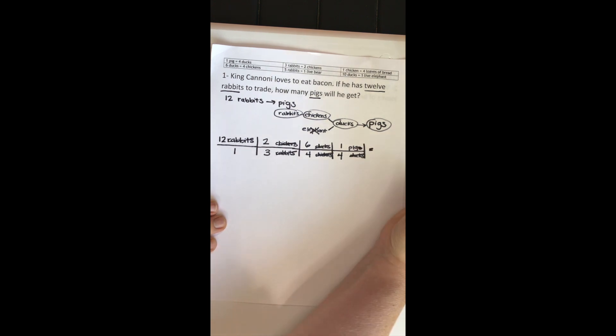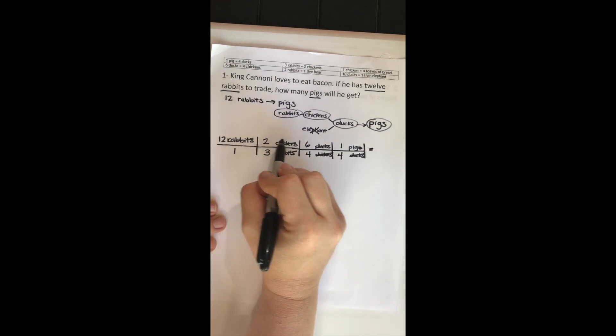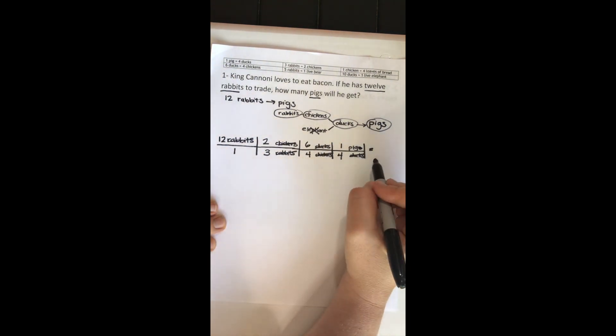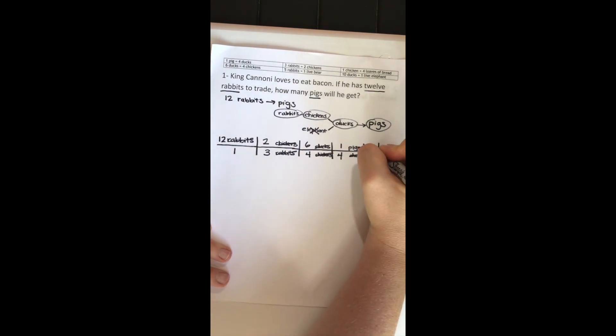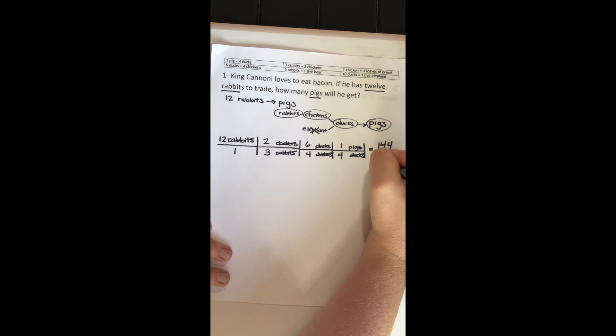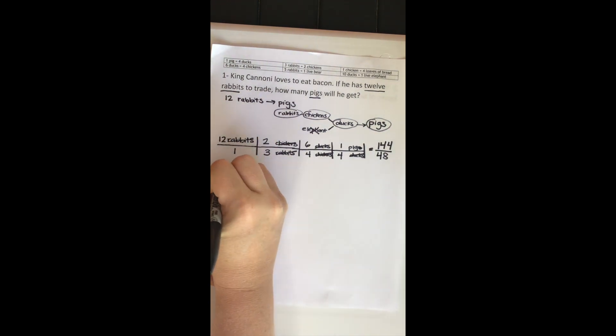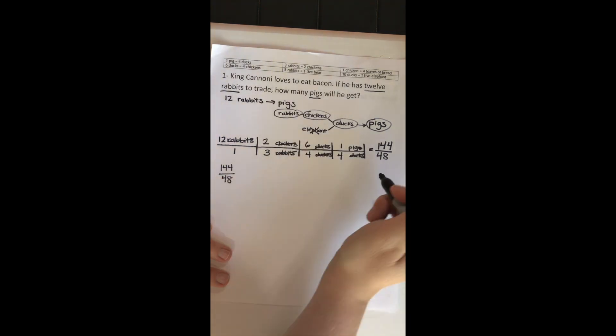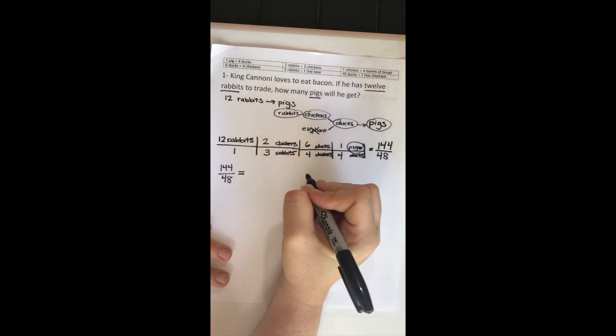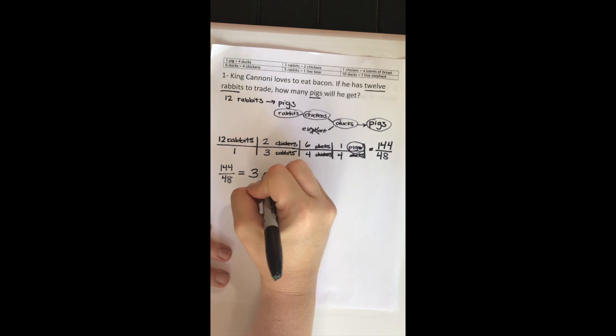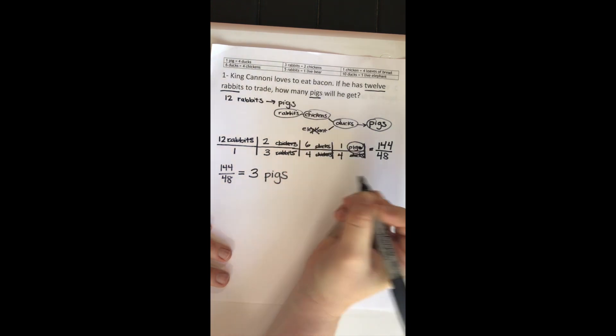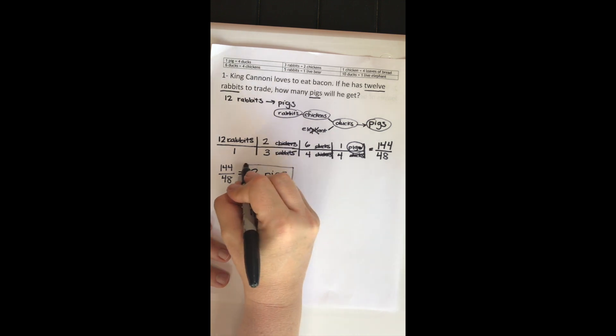So now we can solve our problem. I always have my kids multiply all the way out across the top and multiply all the way out across the bottom first. So we've got 12 times 2 times 6, that's 144. 3 times 4 times 4 is 48, so 144 over 48. Now I'm going to bring it down here, I'm going to rewrite it again. Now remember, we do have units right now. What are the units? Our units are pigs. So when we divide, we always make sure that we put our units. And I have my kids box their answers so that I can easily find it.